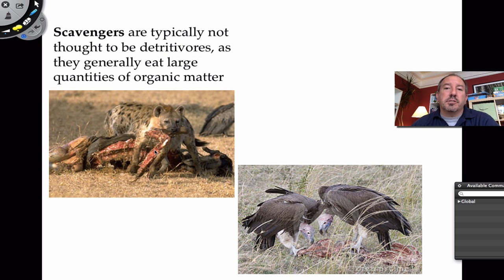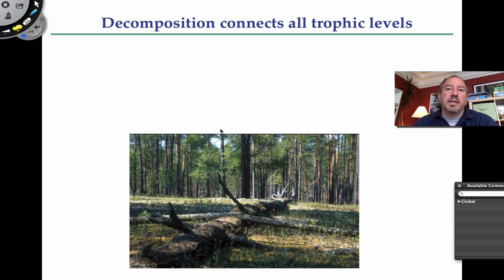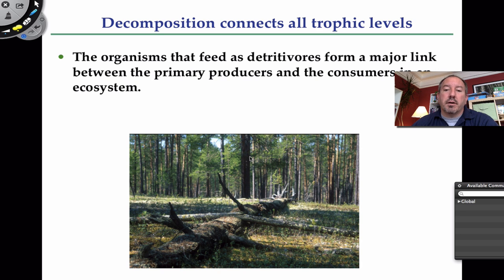There's another type of detrivore called a scavenger. Hyenas and vultures are classic examples — they're eating dead things, so they're a type of detrivore eating detritus, ultimately helping in the recycling. Decomposers — fungi and bacteria — when a tree falls in the forest there's a lot of detritus and nutrients; fungi and bacteria break it down smaller and smaller, then that goes into the soil, and plants pick it back up. Decomposition connects all the trophic levels — it goes back into the plant, which gets eaten by herbivores and carnivores, and when they die it gets broken down again.